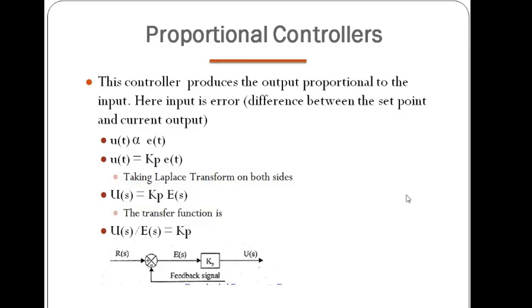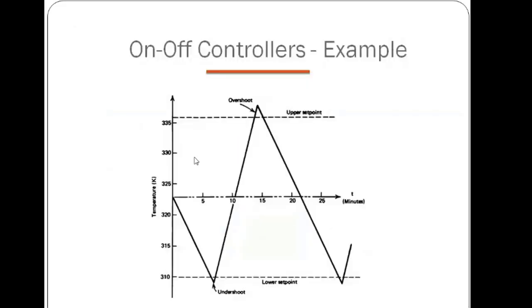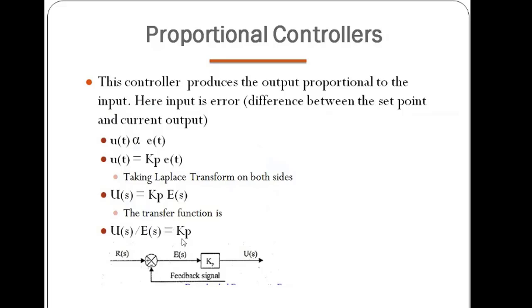The transfer function concept can only be applied when there are zero initial conditions. If there are no zero initial conditions, we cannot apply it for that system. For the controller, the input is the error E(s) and the output is the control signal U(s). So the transfer function of the proportional controller is U(s) divided by E(s), which equals Kp.